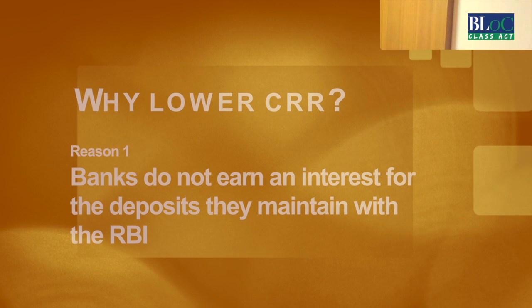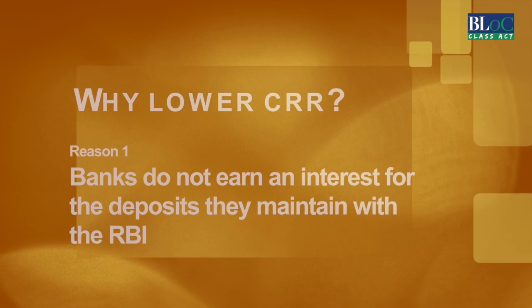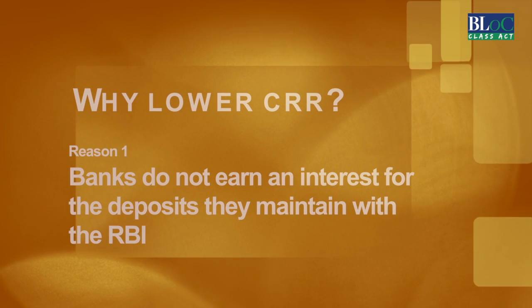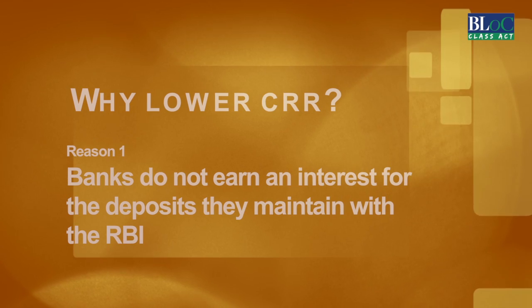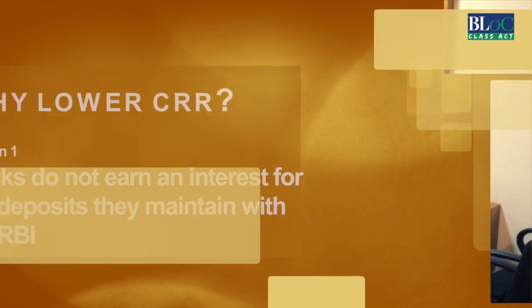There are two reasons for this. One, the banks do not earn any interest on the deposits they maintain with the RBI. For the 4% deposits that banks have to pay interest to depositors, banks are not able to use them for lending purposes. Hence, the banks are demanding that the RBI at least pay a token interest for the deposits they keep with the RBI.